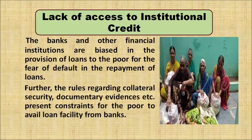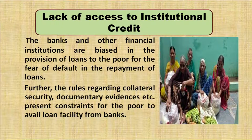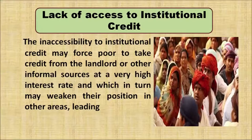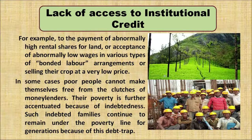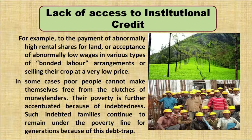Another reason for poverty is lack of access to institutional credit. Banks and other financial institutions are biased in providing loans to poor people because of fear of repayment default. This forces the poor to take credit from landlords or informal sources at very high interest rates, weakening their position in other areas — such as payment of abnormally high rental shares for land, acceptance of abnormally low wages in bonded labour arrangements, or selling their crops at very low rates — resulting in further poverty.